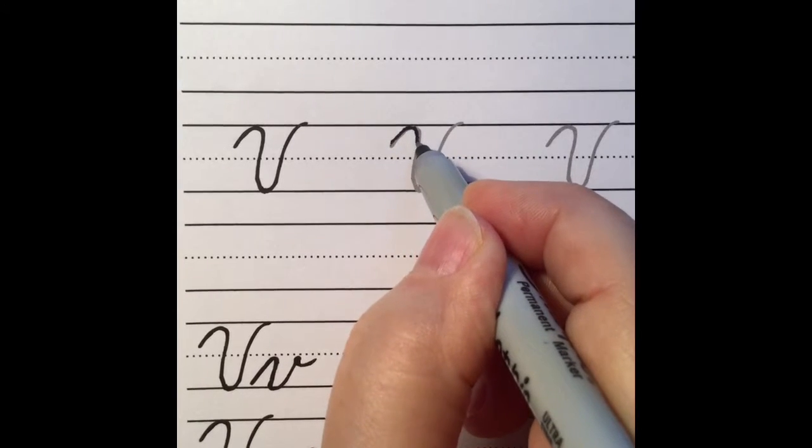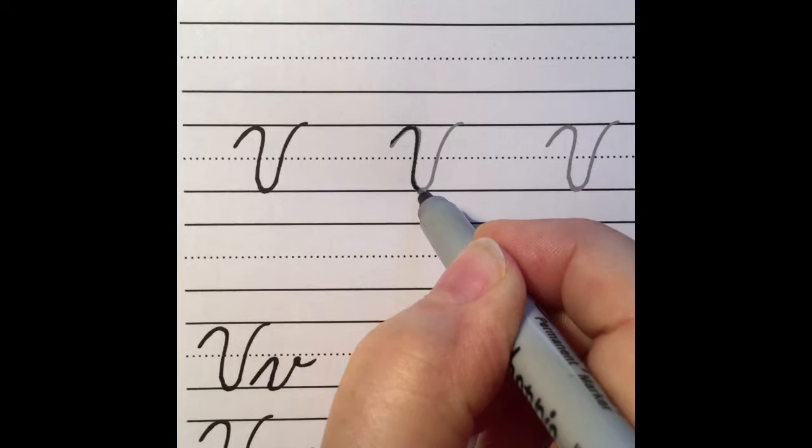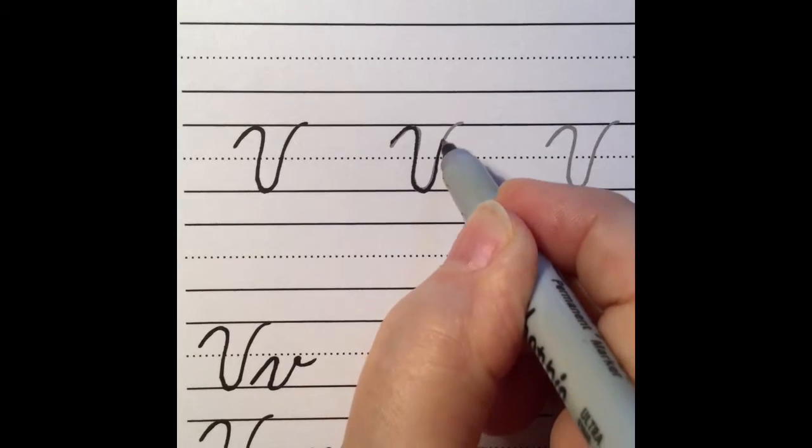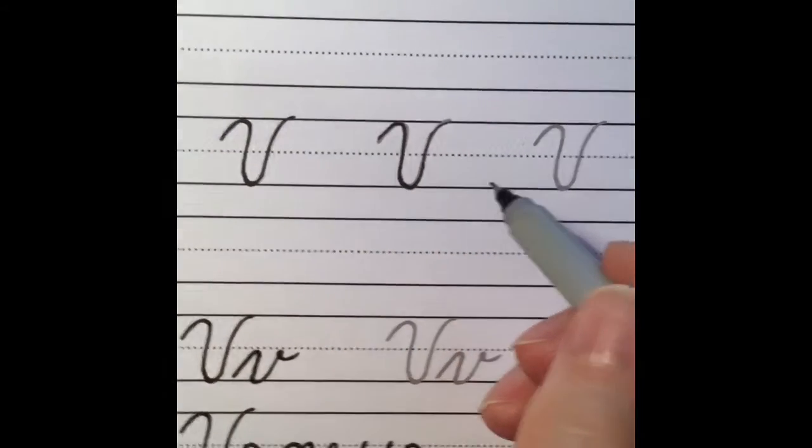So we have our over curve, a straight down to our under curve, and then a little bit of a curve at the ending.